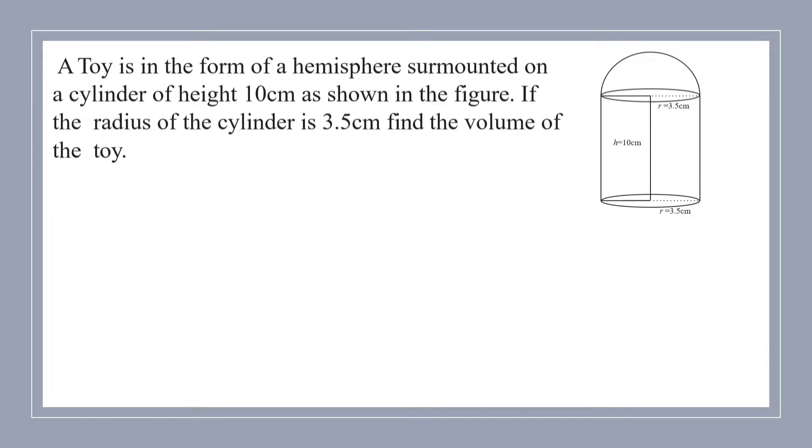A toy is in the form of a hemisphere, this is hemisphere, surmounted on a cylinder, this is cylinder, its height is 10 cm as shown in the figure. If the radius of the cylinder is 3.5 cm, find the volume of the toy.